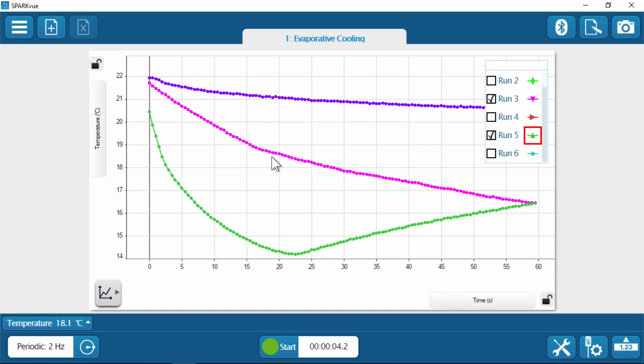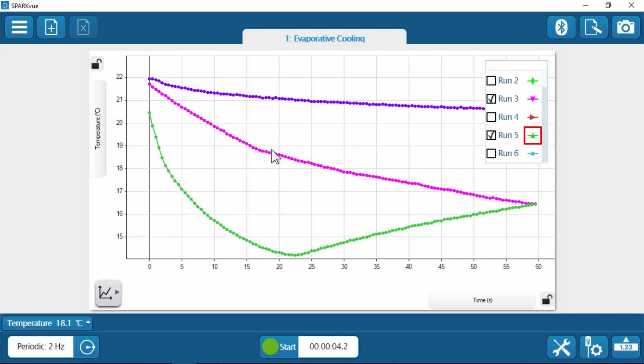The first thing that you'll notice is that run one, water, has a very shallow slope. Run two isopropyl alcohol seems to evaporate at a much greater, faster rate than water. Acetone, of course, seems to evaporate very, very rapidly. But Roger, what do you think is happening when it begins to flex over here?